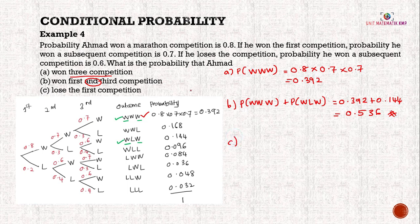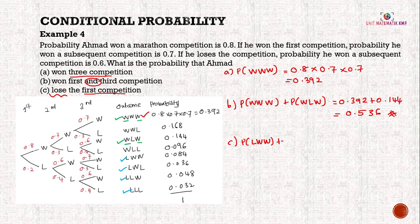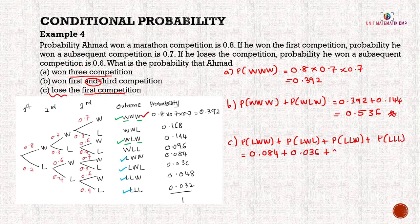For part C — probability that Ahmad loses the first competition — we look at all outcomes starting with L: LWW, LWL, LLW, LLL. Adding all their probabilities: P(LWW) + P(LWL) + P(LLW) + P(LLL) = 0.084 + 0.036 + 0.048 + 0.032 = 0.2.